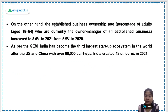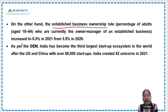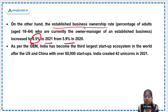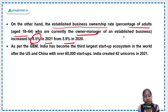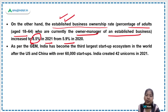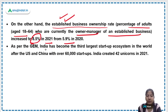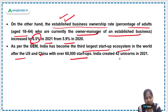The established business ownership rate has also increased to 8.5% in 2021 from 5.9% in 2020 — this is the percentage of adults aged 18 to 64 who are currently owner-managers of an established business. As per the GEM, India has become the third largest startup ecosystem in the world after the US and China, with over 60,000 startups, and in 2021 alone, 42 unicorns were created.